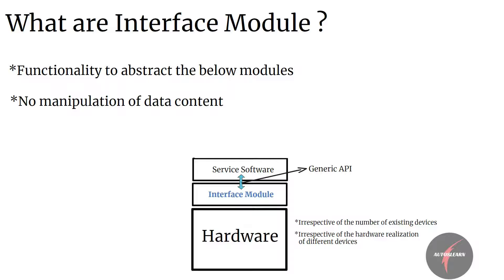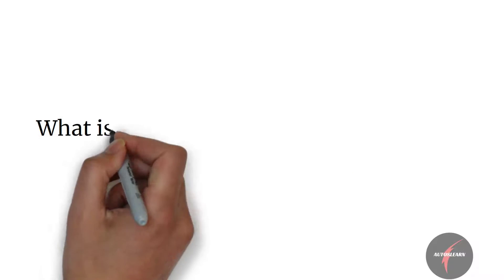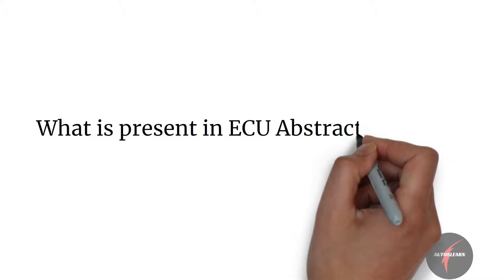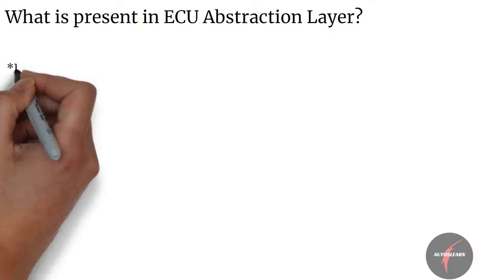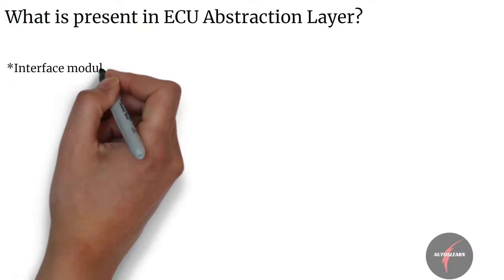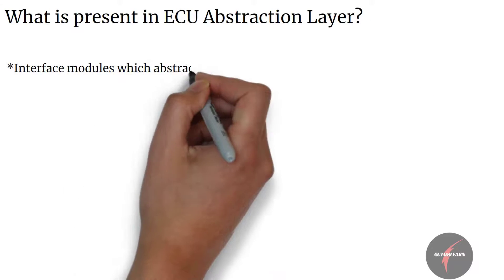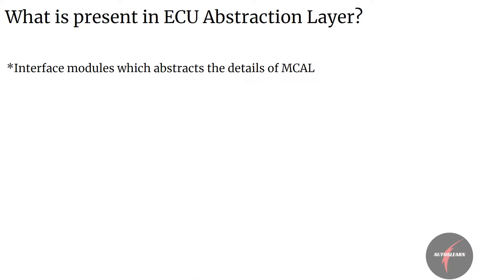With this understanding, let's get into our main topic: what are the different groups of software blocks present in the ECU abstraction layer? The ECU abstraction layer majorly contains interface modules which abstract the details of microcontroller pin connections and the hardware abstraction layer.